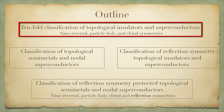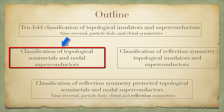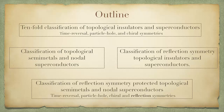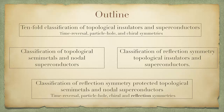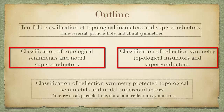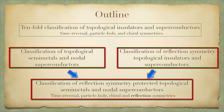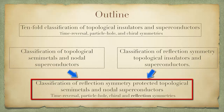This is the outline of our paper. First, we know the tenfold classification of topological insulators and superconductors, which can be extended to classify topological semi-metals and nodal superconductors. Furthermore, by introducing reflectional symmetry, the classification can also be extended to crystalline topological insulators and superconductors. In this paper, we combine these two ideas to classify reflectional symmetry protected topological semi-metals and nodal superconductors.